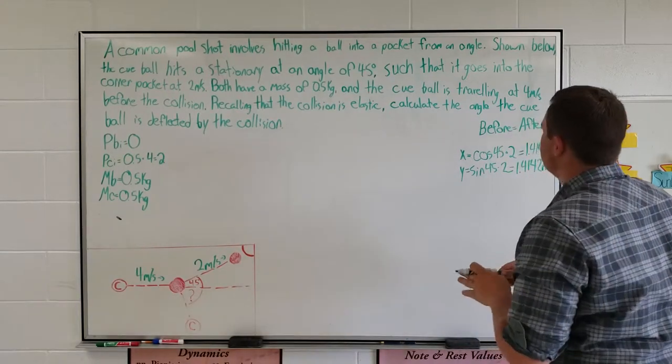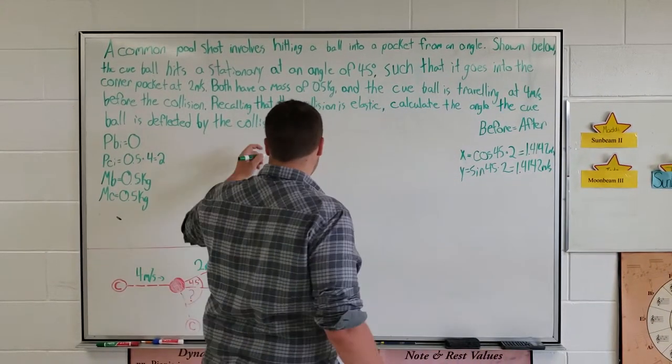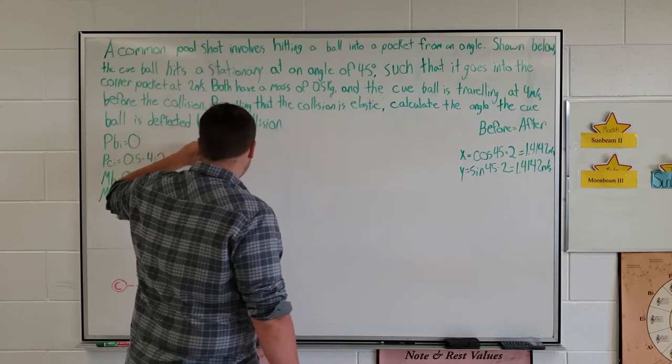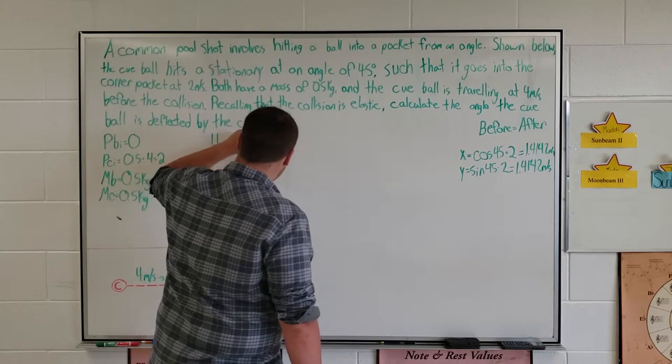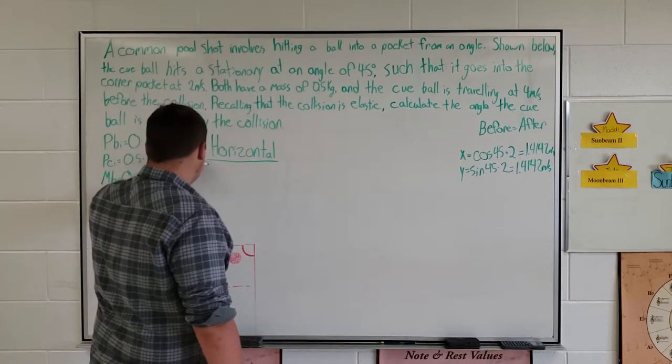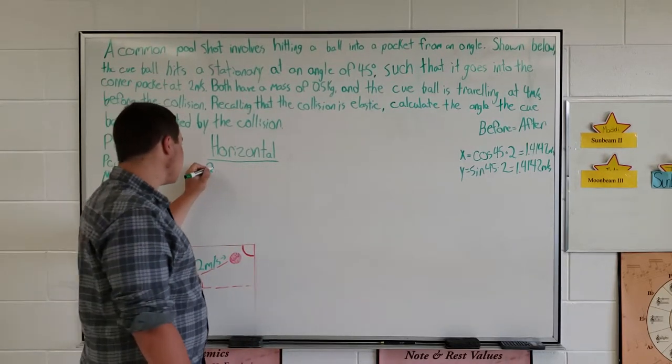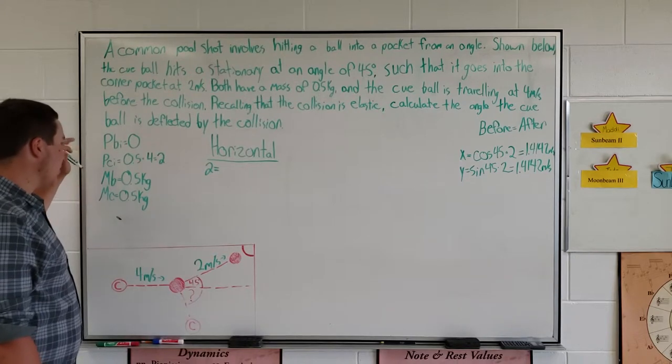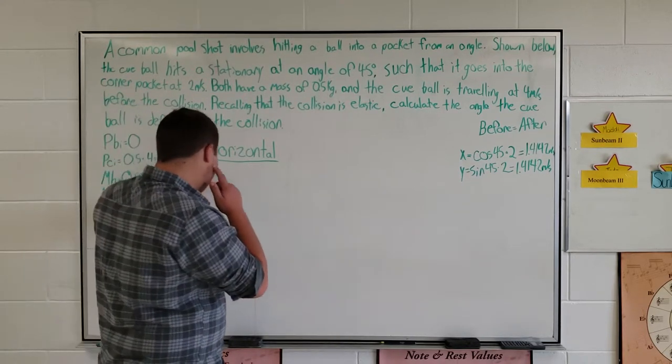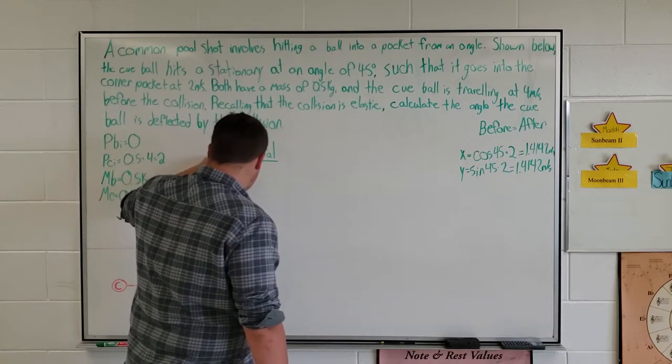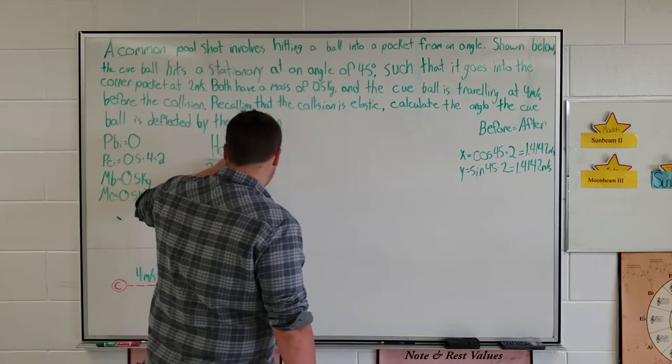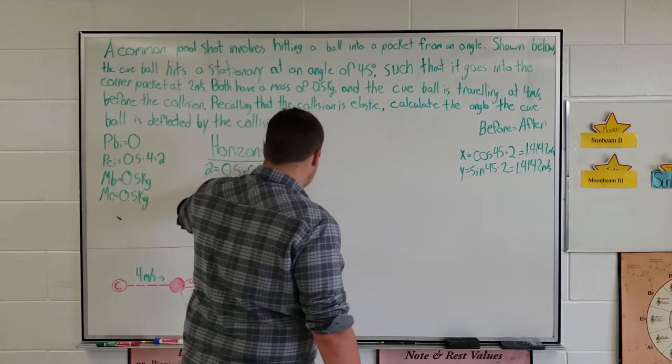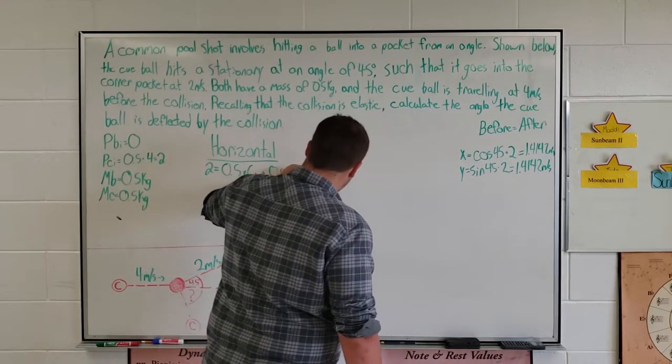Now, since we know that before and after momentum is equal and we have everything we need to find our cue ball's x and y components, we know that horizontally our initial momentum is 2. That is equal to the momentum of the cue ball plus the momentum of ball B. So we need the mass of C times Cx plus the mass of B times 1.4142.